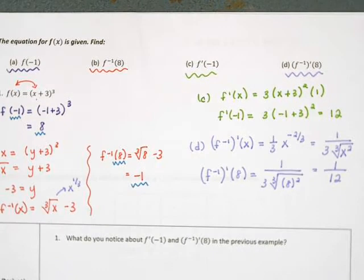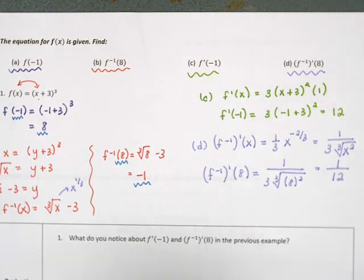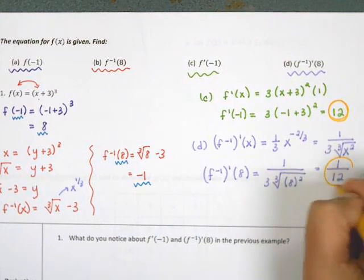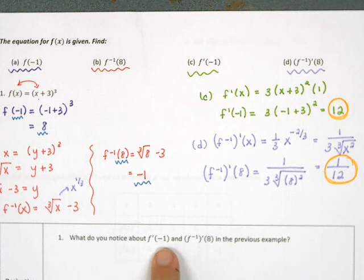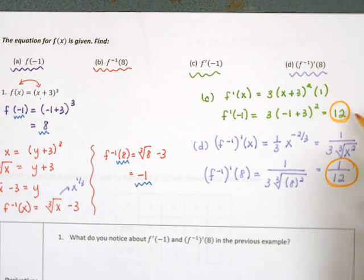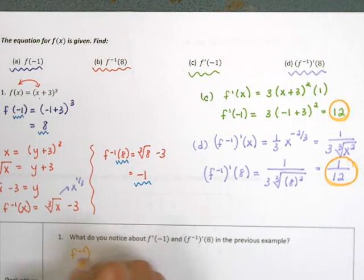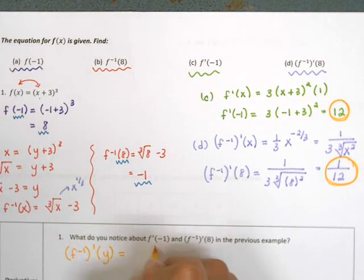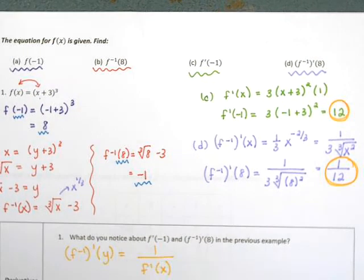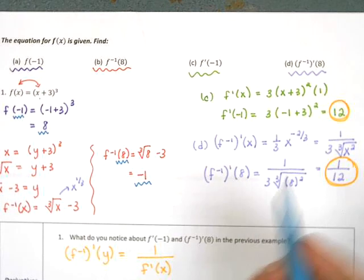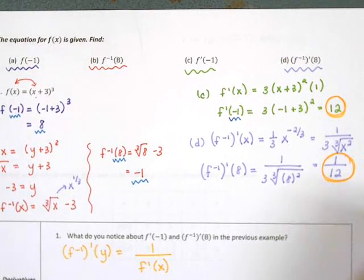Now, to do this we had to find the inverse function before plugging in any numbers. But let's look for a connection between the derivative of the original and the derivative of the inverse. What I notice is that the derivative of the original at −1 is 12 and the derivative of the inverse at 8 is 1/12 — they are reciprocals of each other. To get the derivative of the inverse, I just put 1 over the derivative of the original.